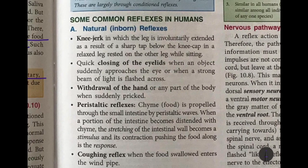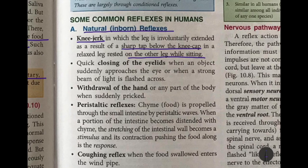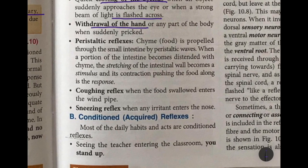Common natural or inborn reflexes in humans include the knee jerk, in which the leg is involuntarily extended as a result of a sharp tap below the kneecap when the leg is relaxed and rested on the other while sitting. Another is the quick closing of the eyelids when an object suddenly approaches the eye or a strong beam of light is flashed, and withdrawal of the hand when something pinches or pricks you.